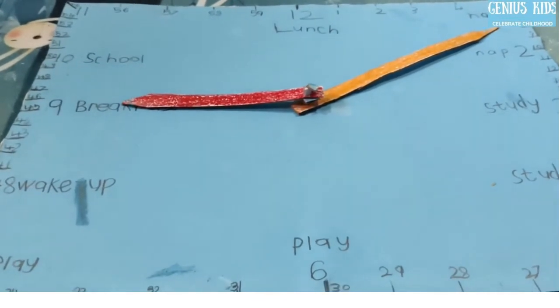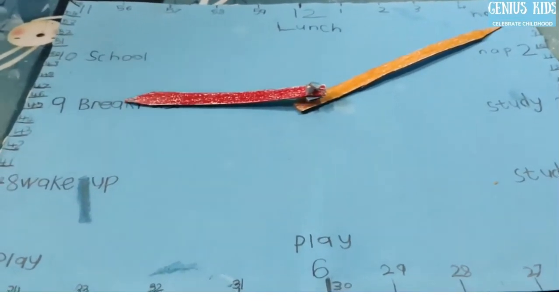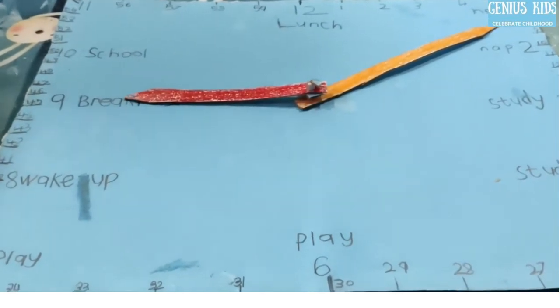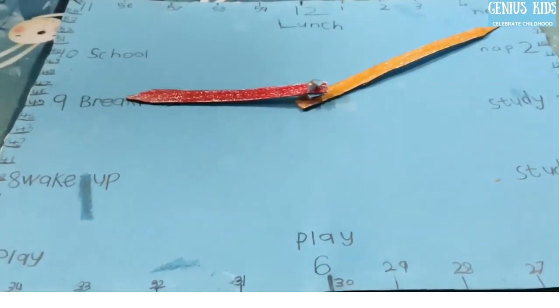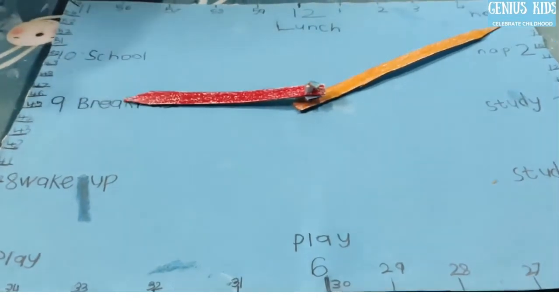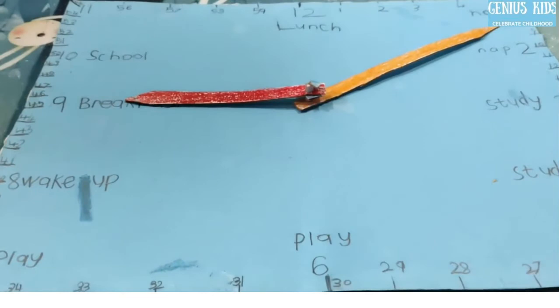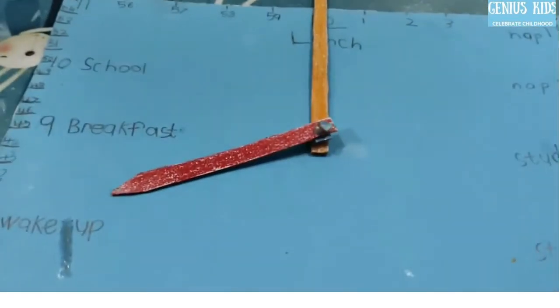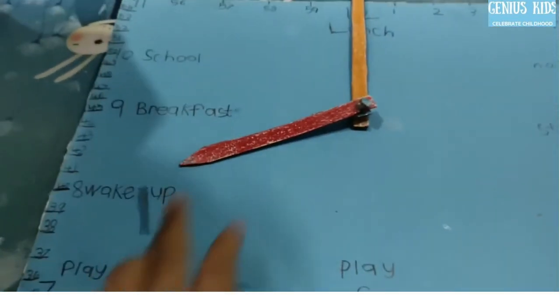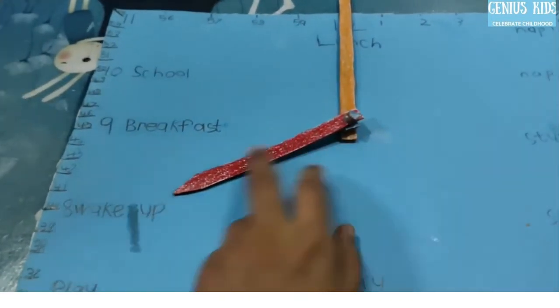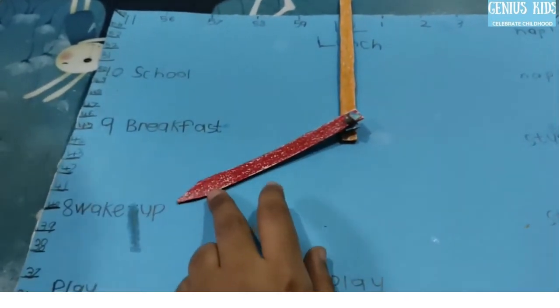So you can tell them that whenever we get something to eat, first we give the smaller one and then we give to the bigger one. Here also we will say the number which is pointed by the smaller hand first, and then the number pointed by the bigger hand. So first we will teach them about hours. So here the minute hand has to point towards 12, and we will just see where the small one is pointing.